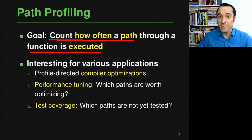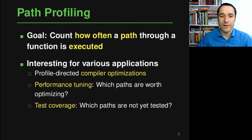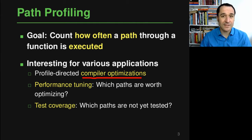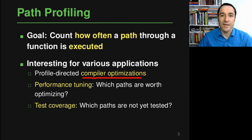Why is this interesting? There are many different applications; I'm listing only three here and we look at another one in the third video. One application is so-called profile-directed compiler optimization, where the compiler does not optimize the program ahead of time without having seen any runs, but actually looks at an execution profile and uses this to optimize those parts of a program that are executed most often.